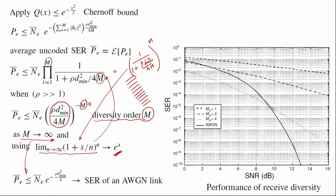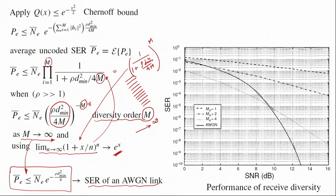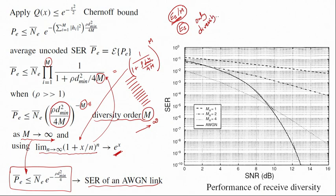A careful note: we have not increased the power per diversity branch. The power per branch remains E_s/M, so total received power stays at E_s — no more than the single-link case. This result is for pure diversity only. As we increase diversity order towards infinity, even without increasing power, the error probability can approach that of an AWGN link.